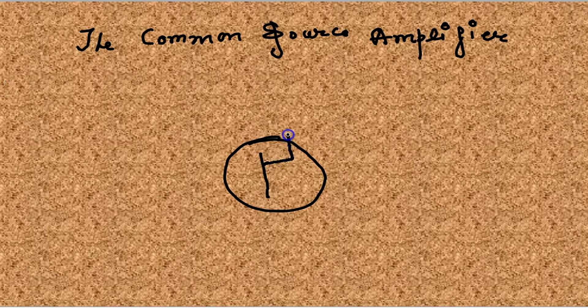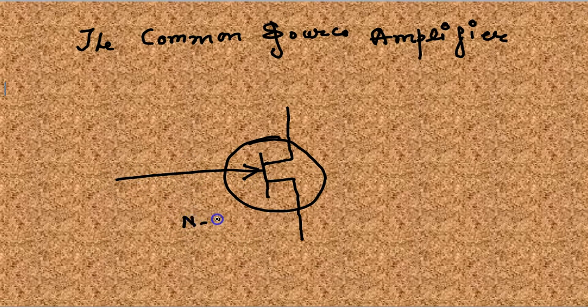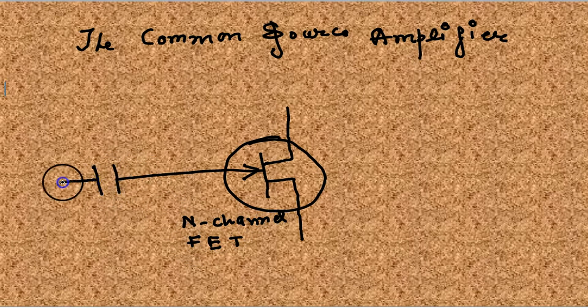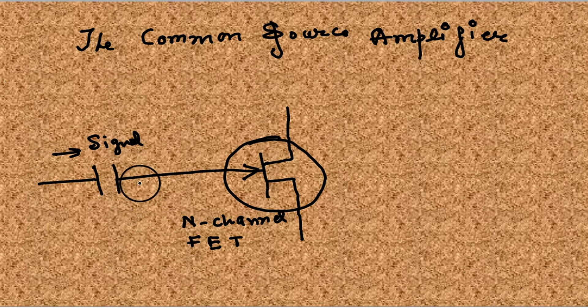I'm going to explain the common source amplifier using FET, field effect transistor. The arrow is inward, so this is an N-channel FET. This capacitor is through which the signal is sent to the gate.